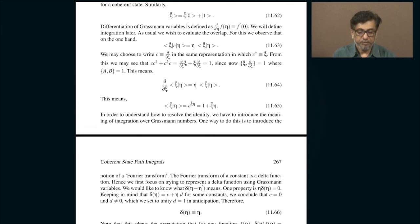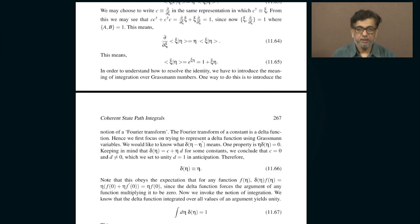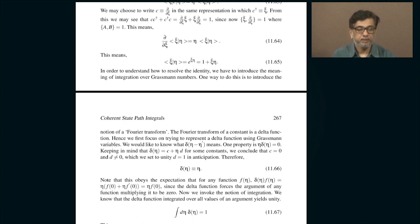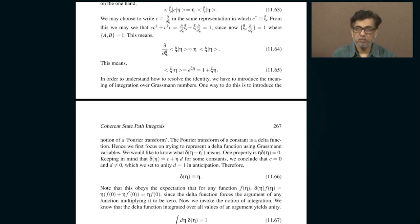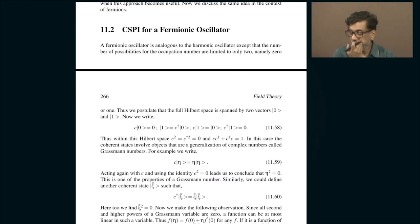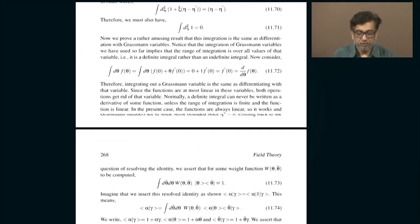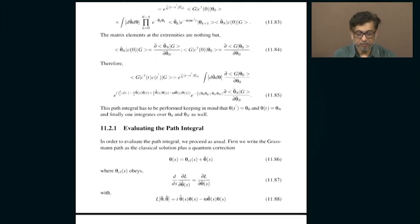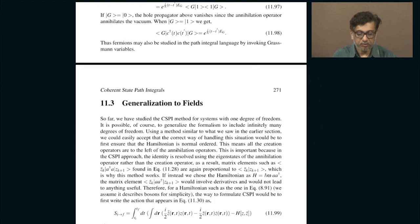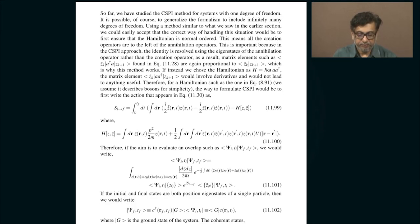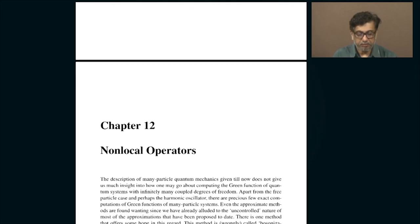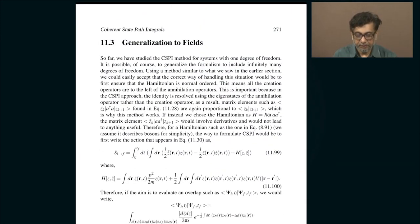The more interesting thing will be when I generalize all this to fermions — which is the real reason people do this. Fermionic coherent states are very peculiar: the eigenvalues of the annihilation operator are not complex numbers but what are called Grassmann numbers. Grassmann numbers are anti-commuting versions of complex numbers — they are complex numbers of a very peculiar kind where a non-zero number whose square is zero. That seems impossible, but that is what a Grassmann number is. All path integrals for fermions will involve these bizarre objects, and then finally we will generalize to fields.